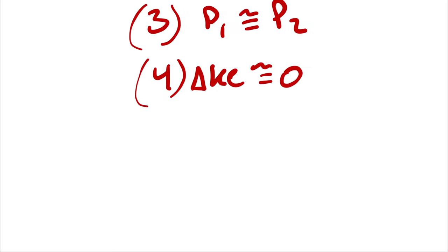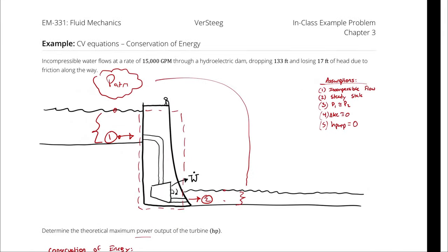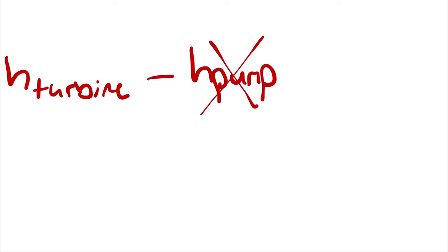We need the turbine head and the friction head, but the pump head doesn't make sense for this problem. We have no opportunities for a pump to be operating, therefore we can get rid of our pump head.